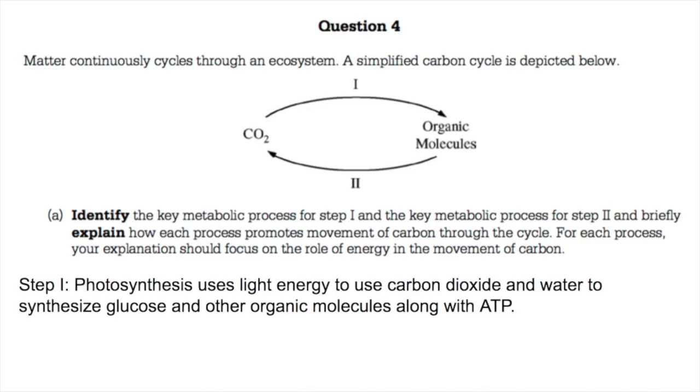Step 1 turns CO2 into organic molecules and we can say that this is photosynthesis, which uses light energy and fixates carbon dioxide with water to synthesize carbon-containing molecules, organic molecules like glucose and amino acids, along with ATP.